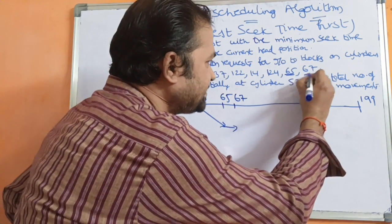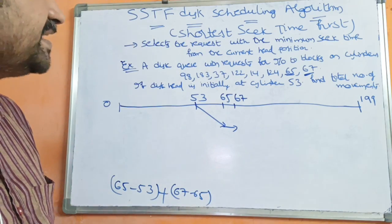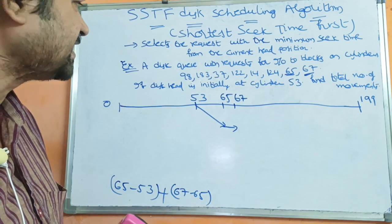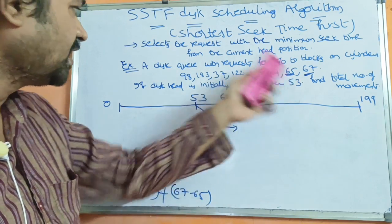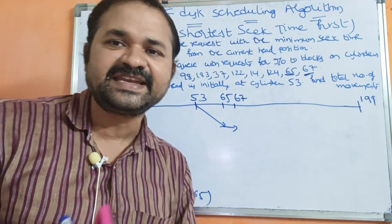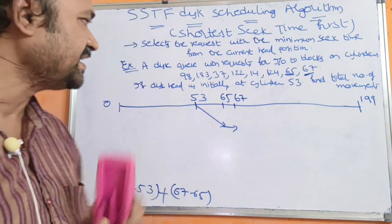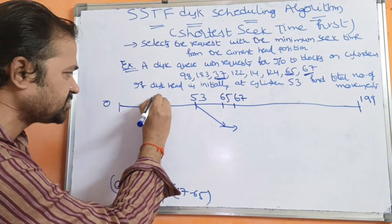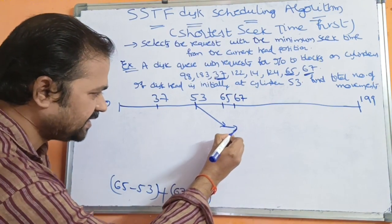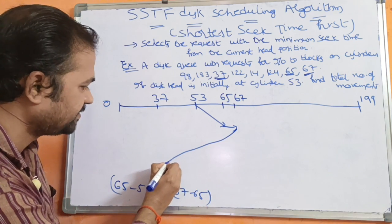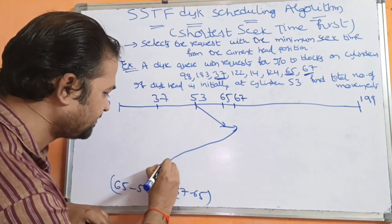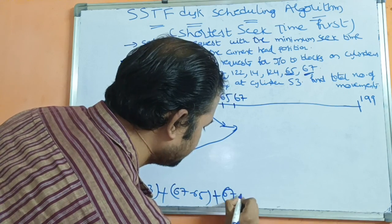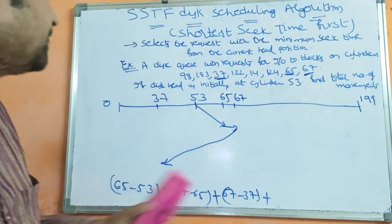Now we are at cylinder 67. The nearer value to 67 is 37, because the difference between 67 and 37 is 30, while the difference between 98 and 67 is 31. So the next cylinder is 37. The movement is 67 minus 37.